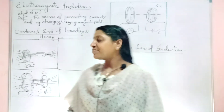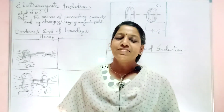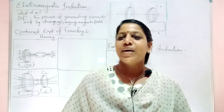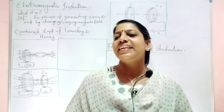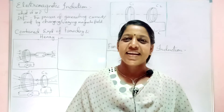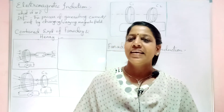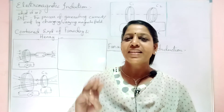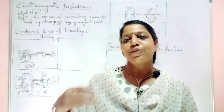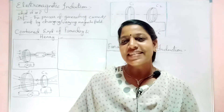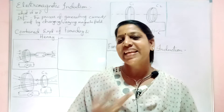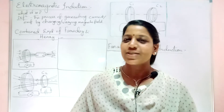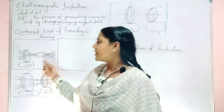Now, there were some combined experiments by two scientists — one is Mr. Henry and the other is Mr. Faraday. Combinedly, they did three experiments to conclude that these are the different methods we can adopt to generate current or electricity. So let us see what the first method was.